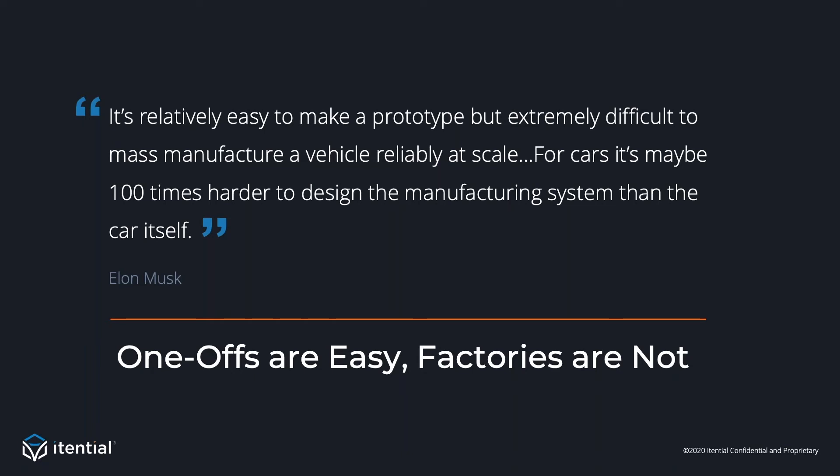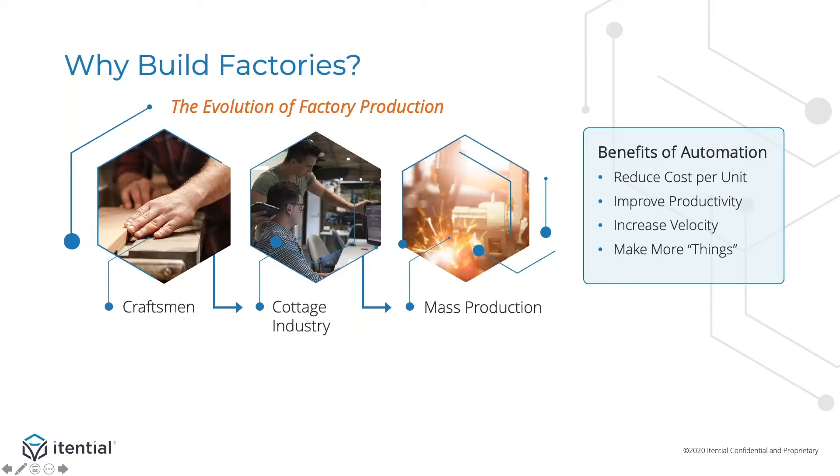Most of you are familiar with Elon Musk's efforts to drive innovation in the automotive industry. Back in 2018, there was a lot of press that highlighted the struggles that Tesla was having in their attempts to mass produce its cars. When the Model 3 was unveiled, Musk made some comments on those struggles, talking about how it was relatively easy to build one car, but it was significantly harder to create a manufacturing system that could produce those cars at scale. This challenge is not specific to building cars — it applies to many industries, including network automation.